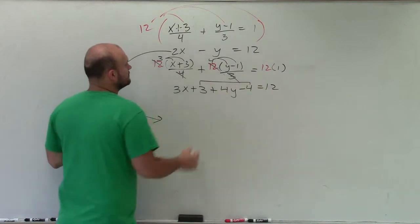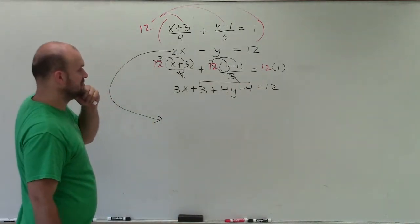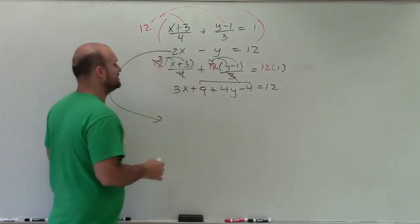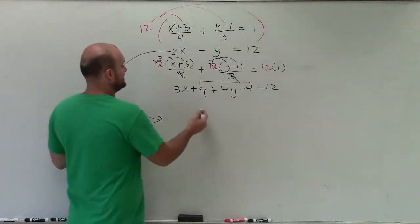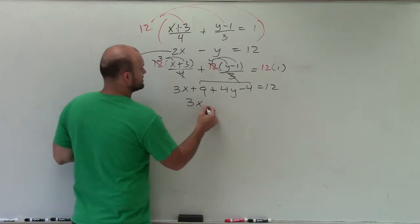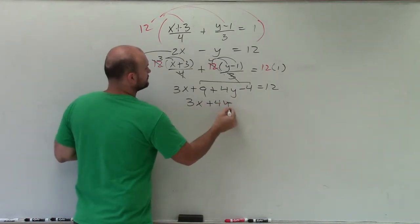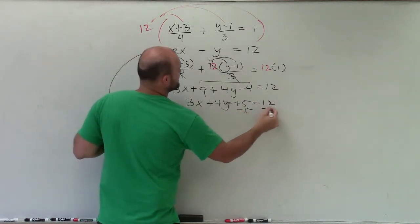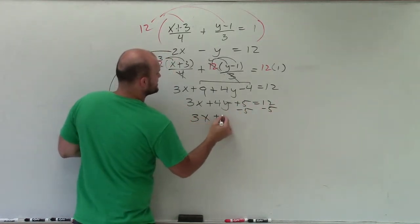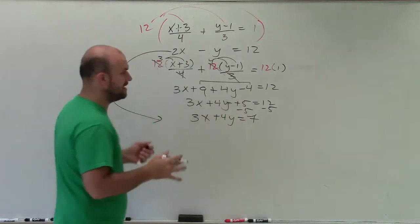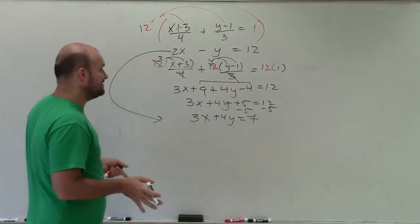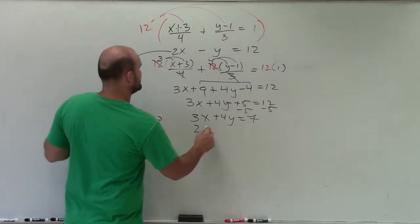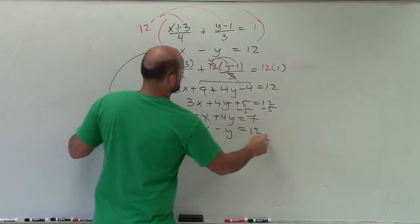Well, I can combine. Ah, 3x plus 9. I knew I made a mistake. 3x plus 9. Now I can combine these, so I have an equation of 3x plus 4y plus 5 equals 12. Subtract the 5, subtract the 5. 3x plus 4y equals 7, right? Now, let's go ahead and bring this equation back over here, which is 2x minus y equals 12.